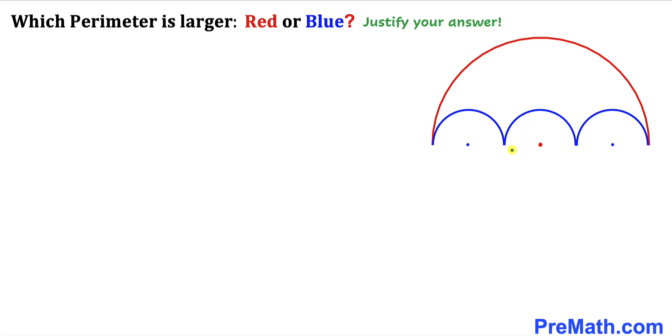In this video we have three identical blue semicircles inscribed in a big red semicircle, as you can see in this diagram, such that these blue semicircles are tangent to each other.